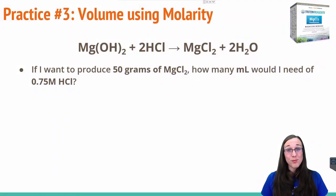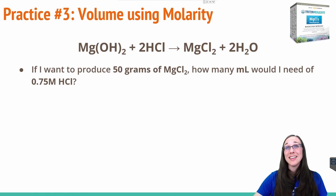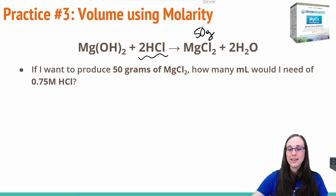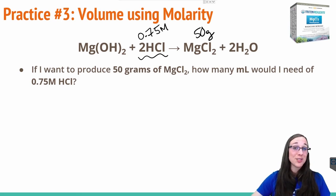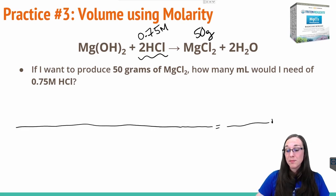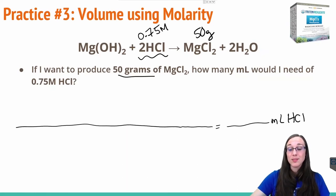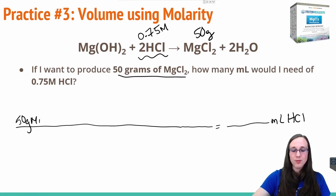In this practice problem, we're solving for a value of milliliters or volume using molarity as a conversion factor. It's asking: we want 50 grams of magnesium chloride, and we want to know how many milliliters of hydrochloric acid would we need at 0.75 molar concentration in order to create 50 grams of magnesium chloride? This certainly sounds like a stoichiometric setup, so let's draw a magical line to freedom. The goal is milliliters of HCl. My given is 50 grams of magnesium chloride — that'll be the first thing on my line.